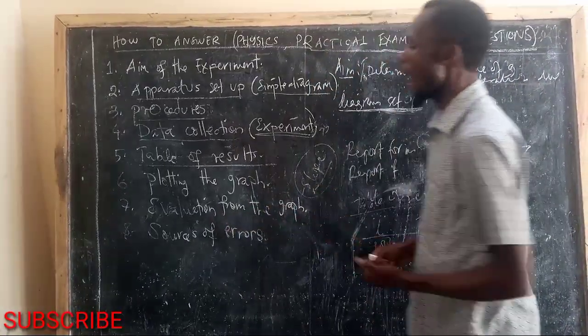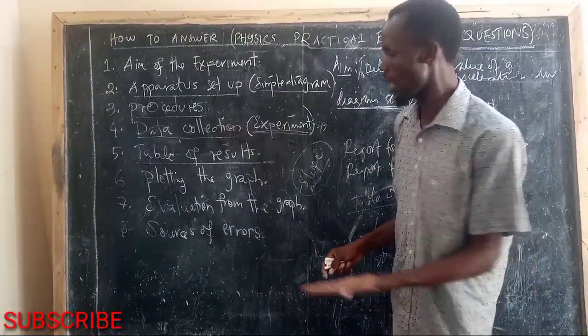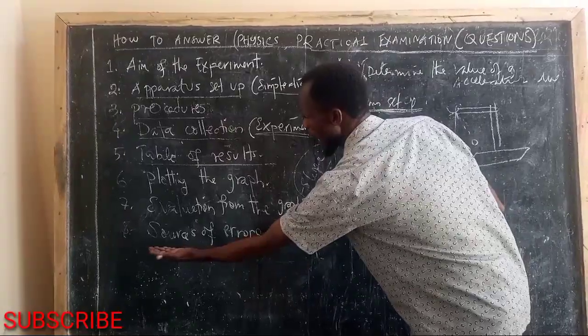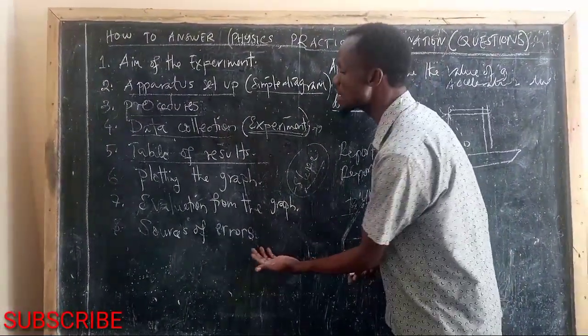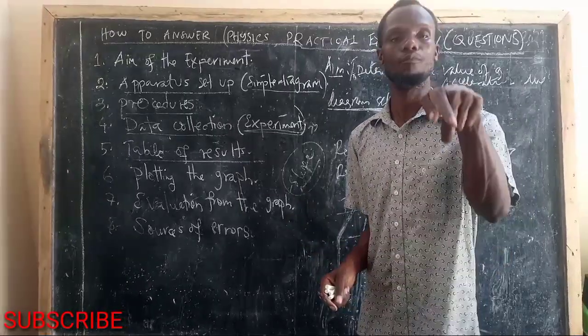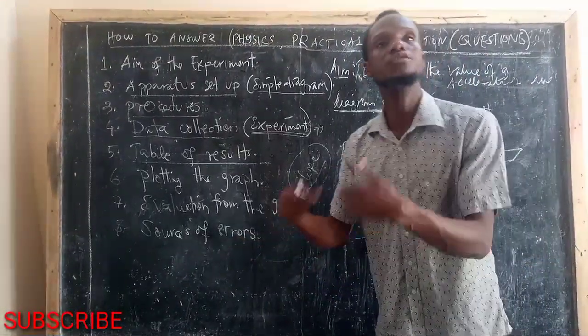And the last thing you have to consider. What are the sources of errors? When I am conducting the experiment, I expect that there must be some sort of error that I am facing. So you have to list those things. And this depends on the experiment.